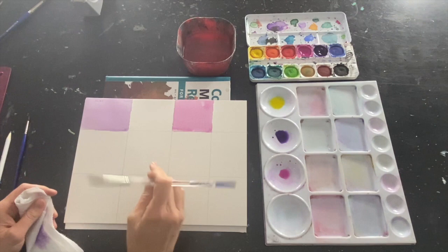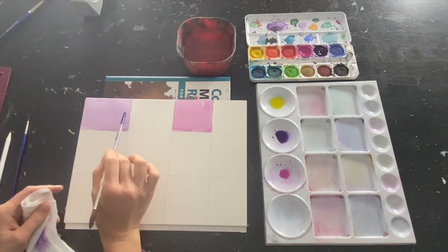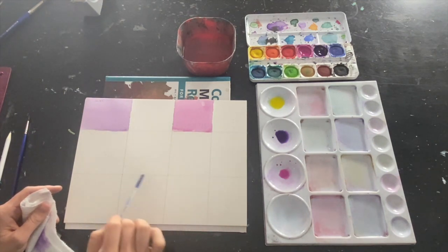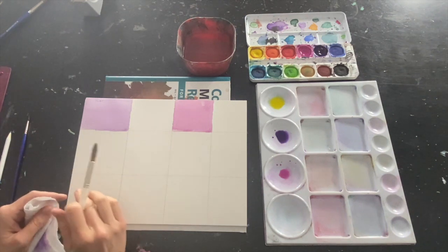So, for the remainder of this, I want you to practice all flat washes. Let any boxes dry before working next to them. Just work your way all around and fill the grid with all flat washes. Practice makes perfect.